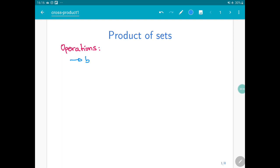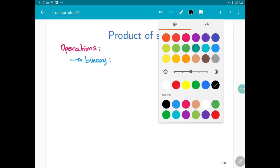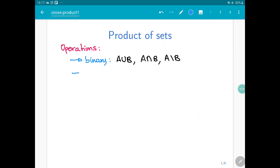Among the binary operations, remember that we have the union, the intersection, and the difference of two sets. Binary operation means that you take two sets and the result of the operation is also a set. And also, we have unary operations.